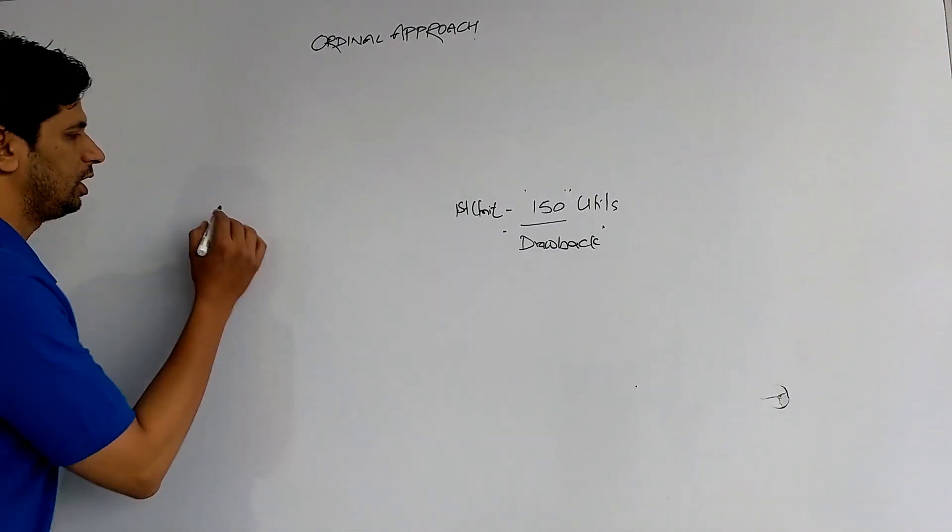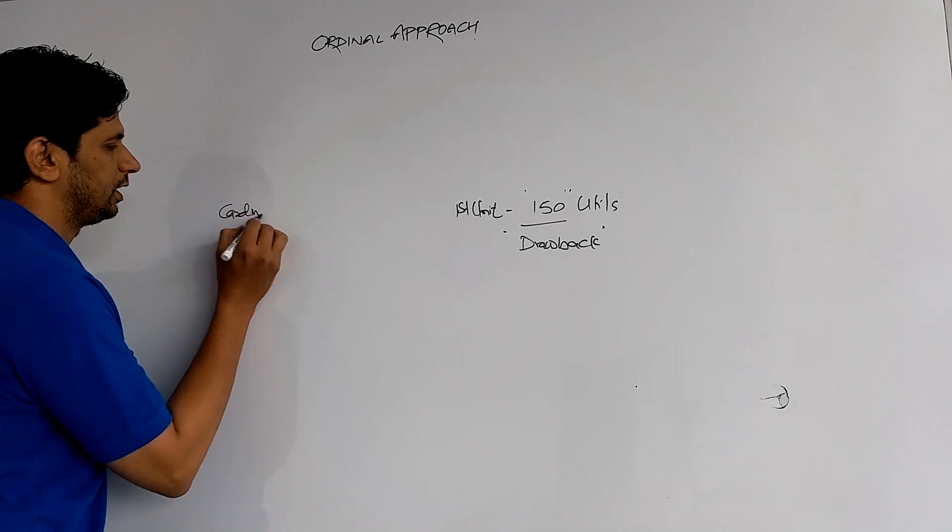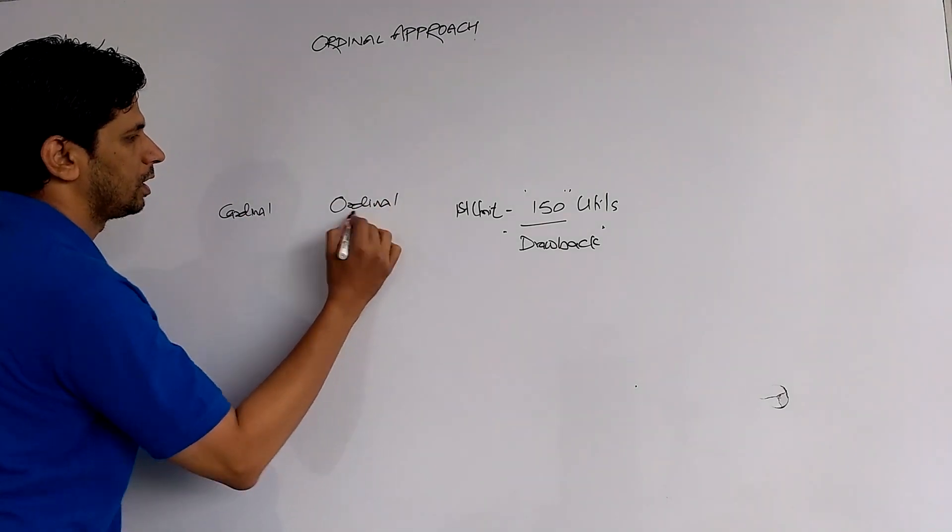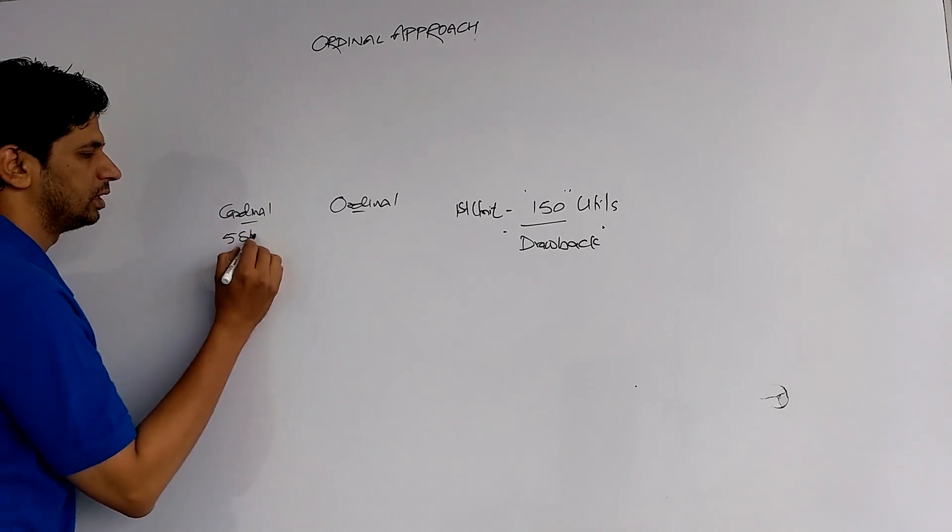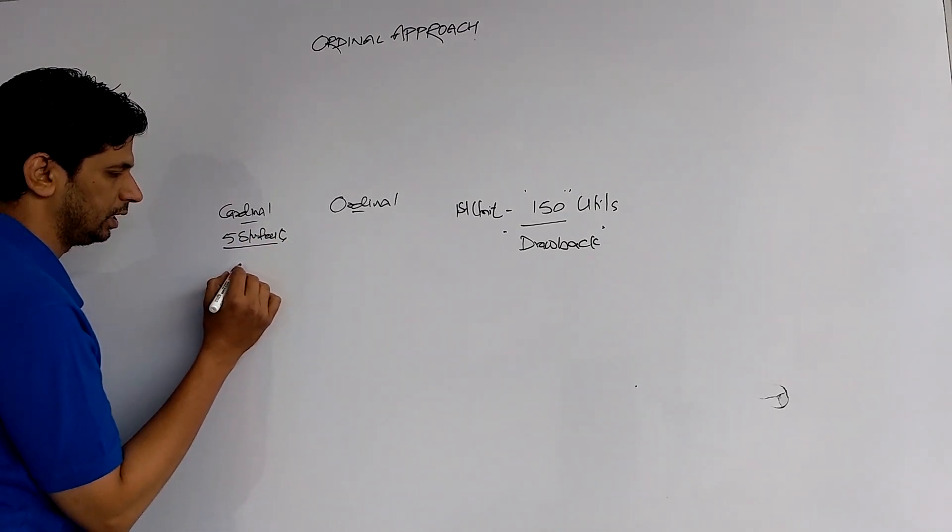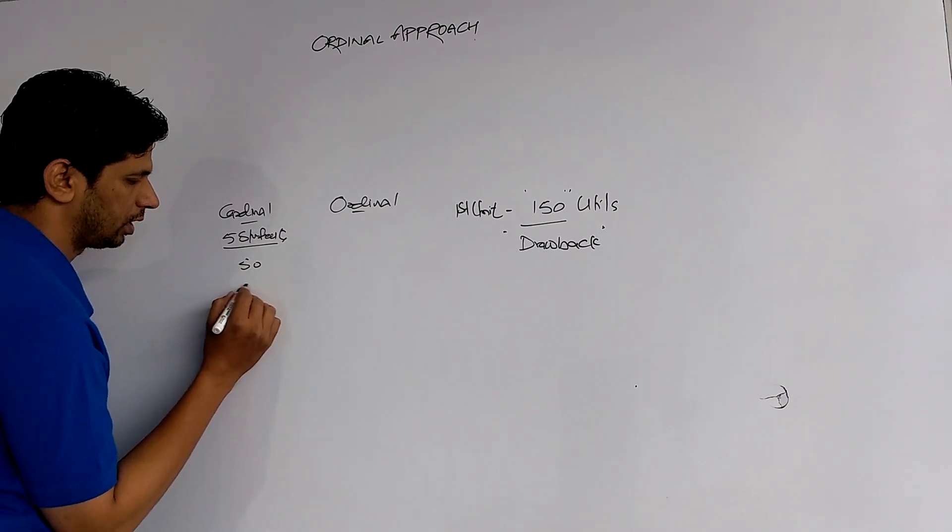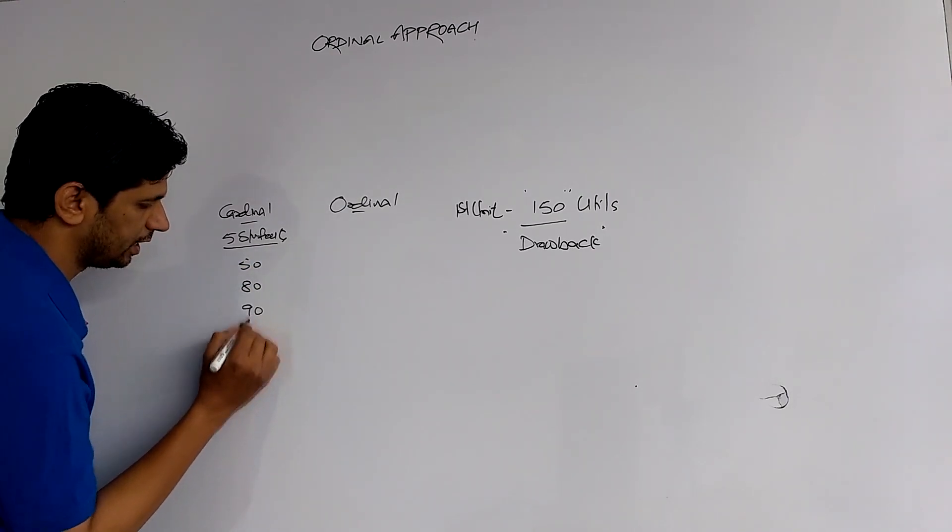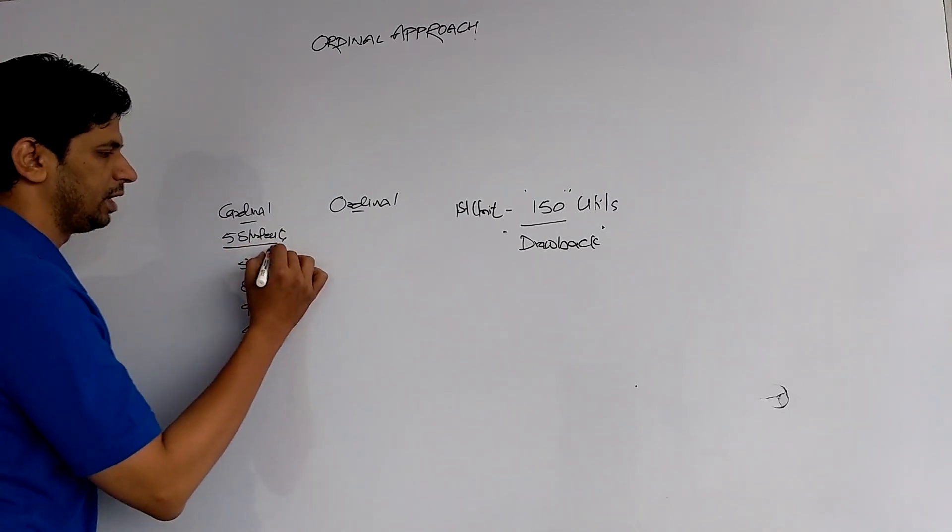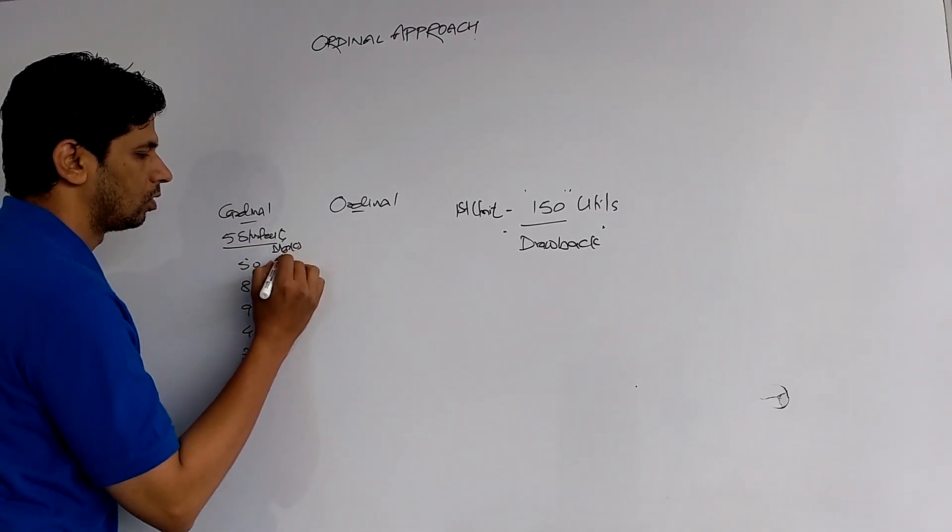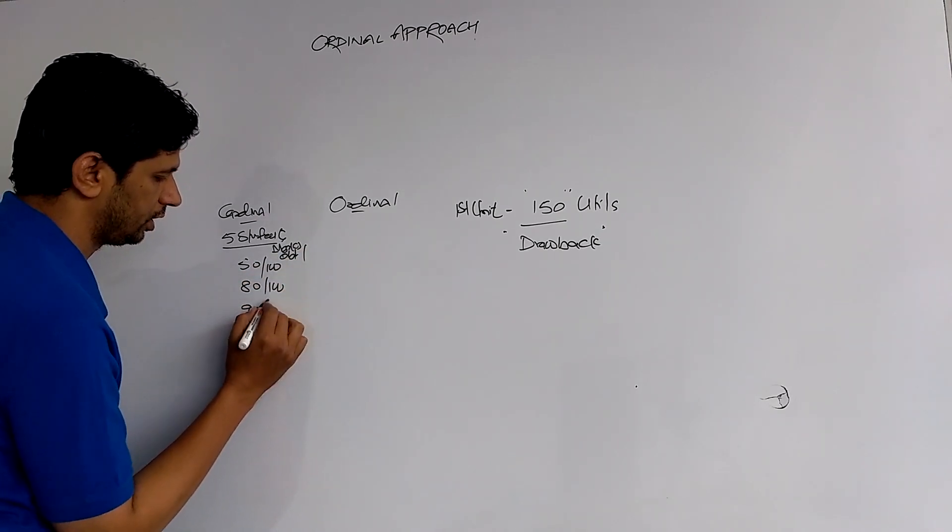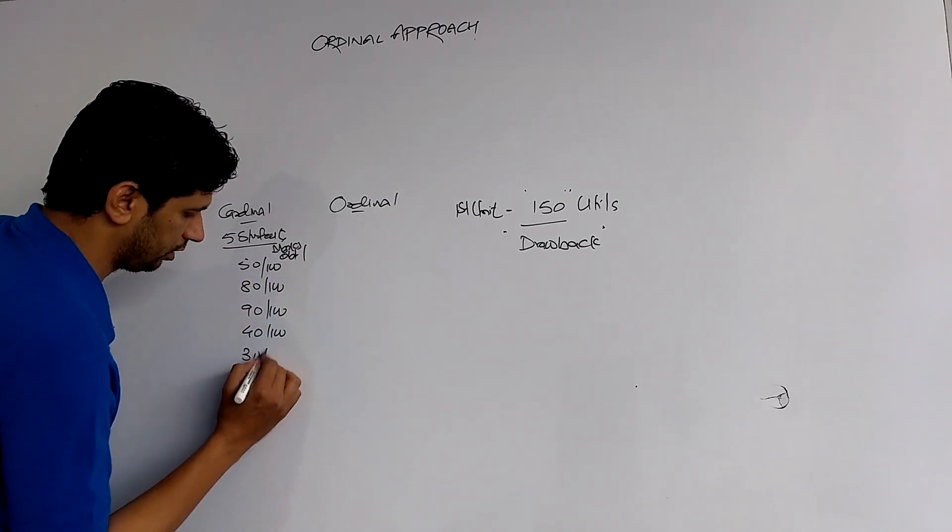Cardinal numbers and ordinal numbers - we have seen a difference. In cardinal numbers, say in a class there are total five students, and five students score 50, 80, 90, 40, and 30 marks. These marks obtained out of 100, the marks you score or your percentage, that percentage is called cardinal numbers.